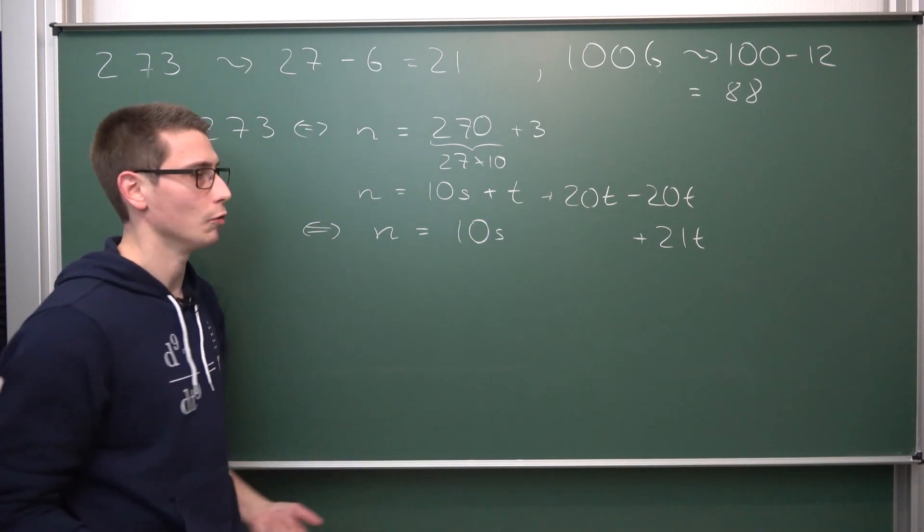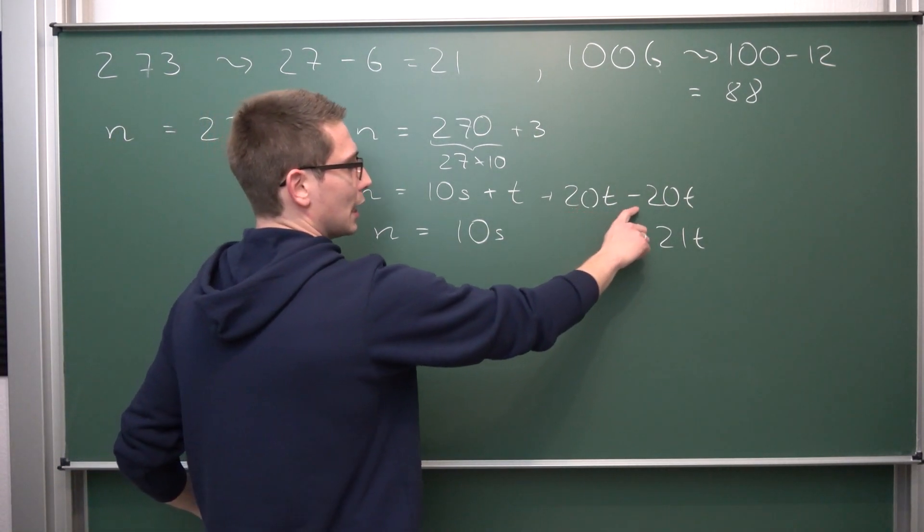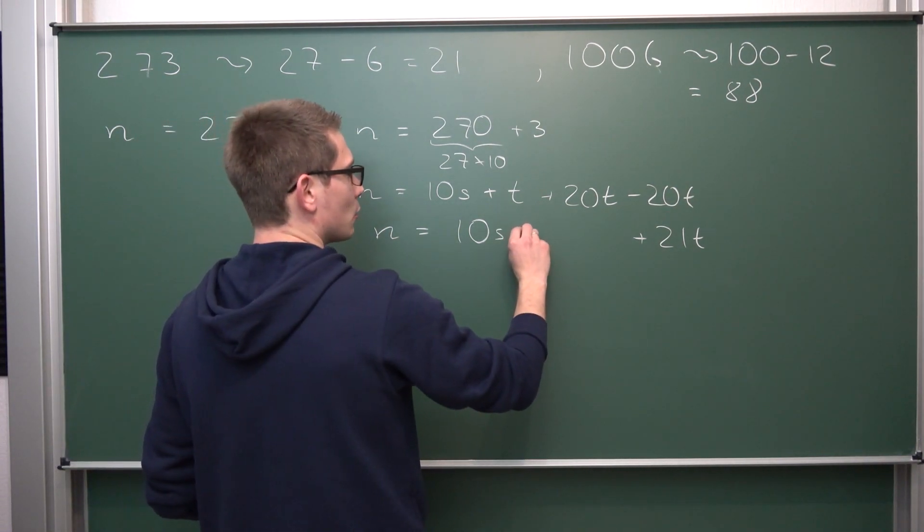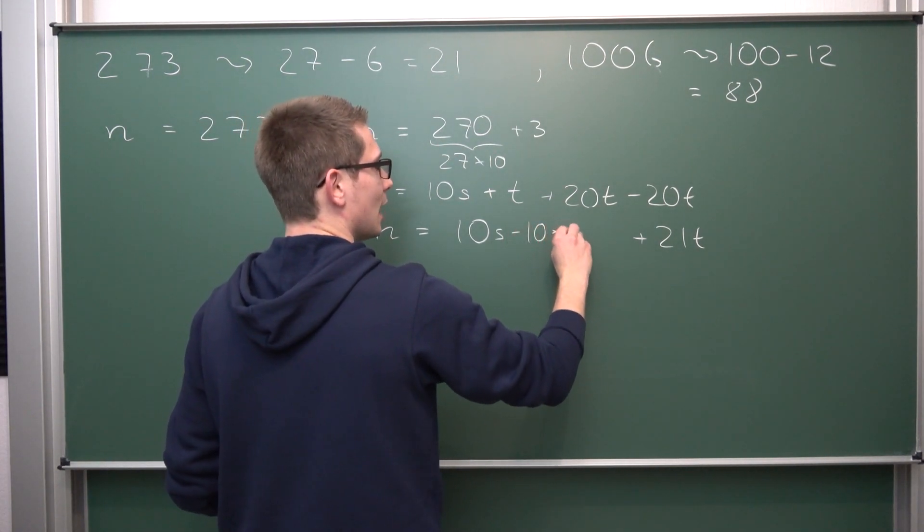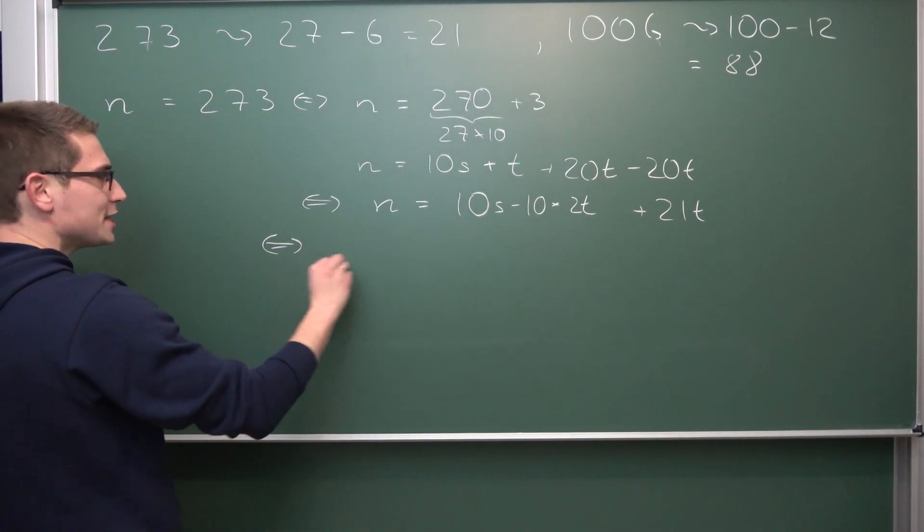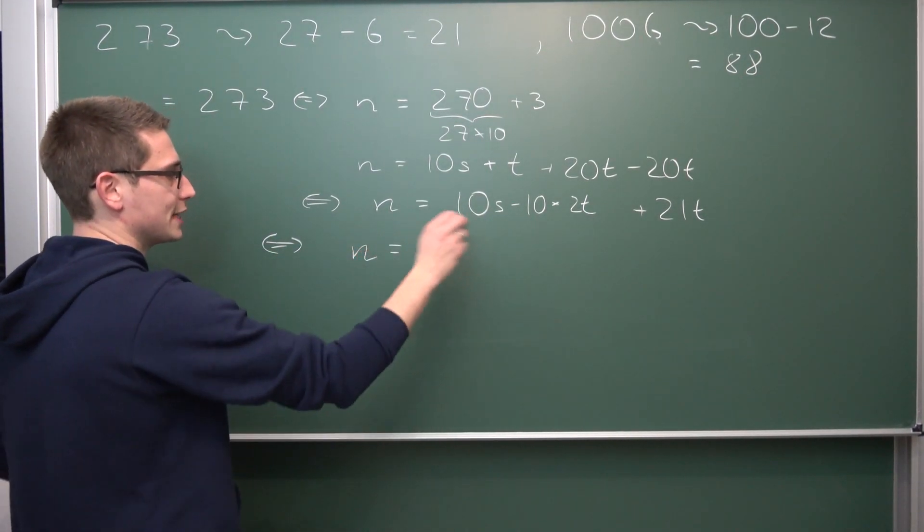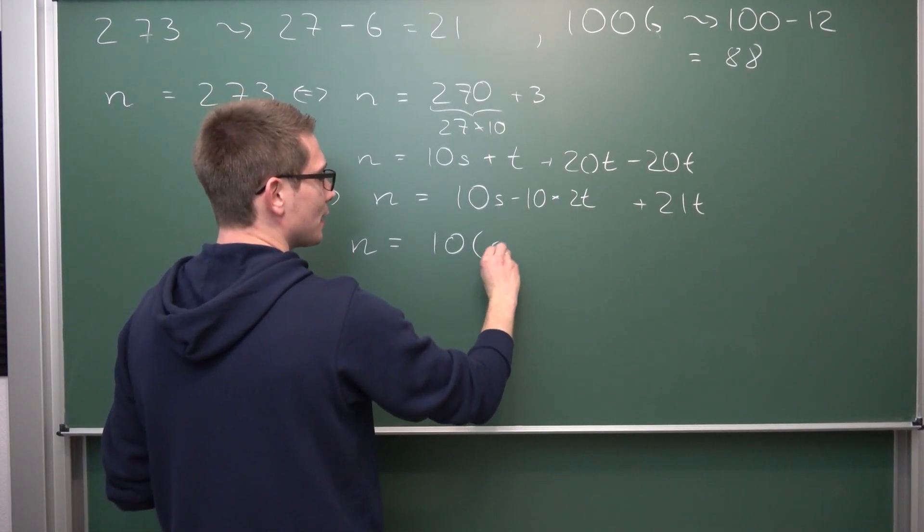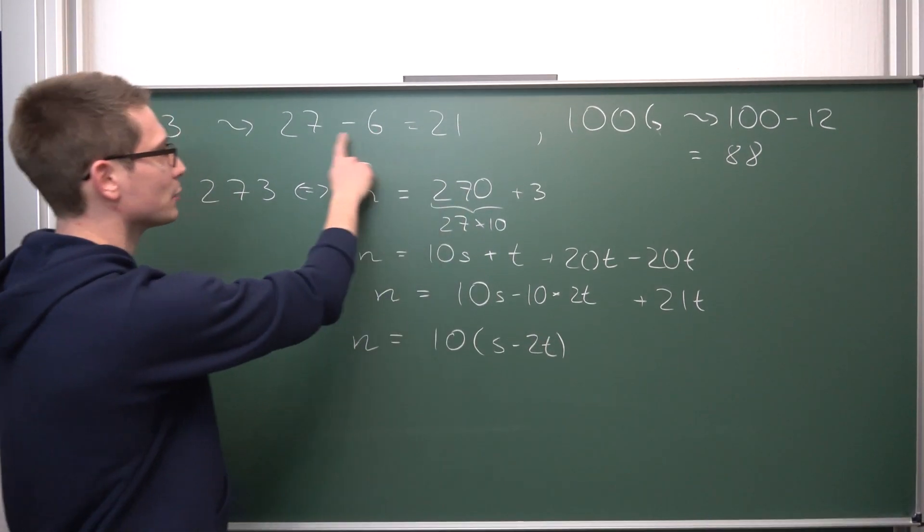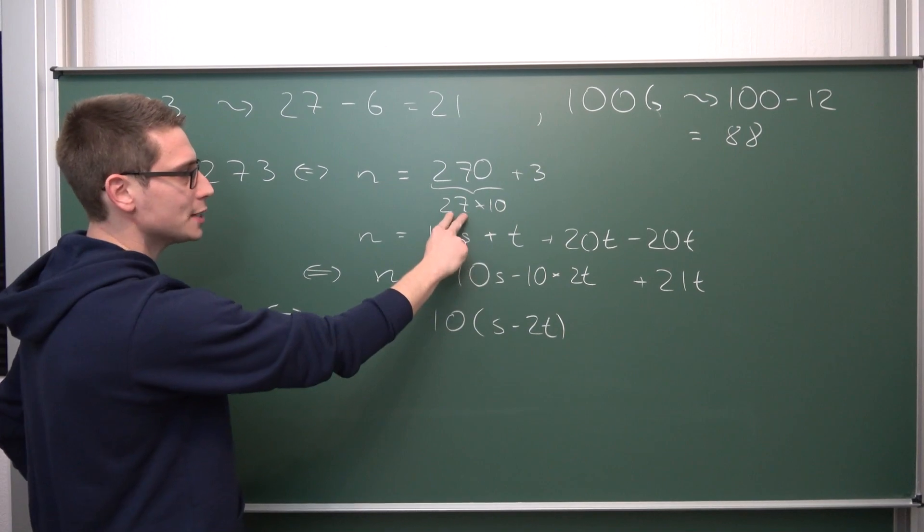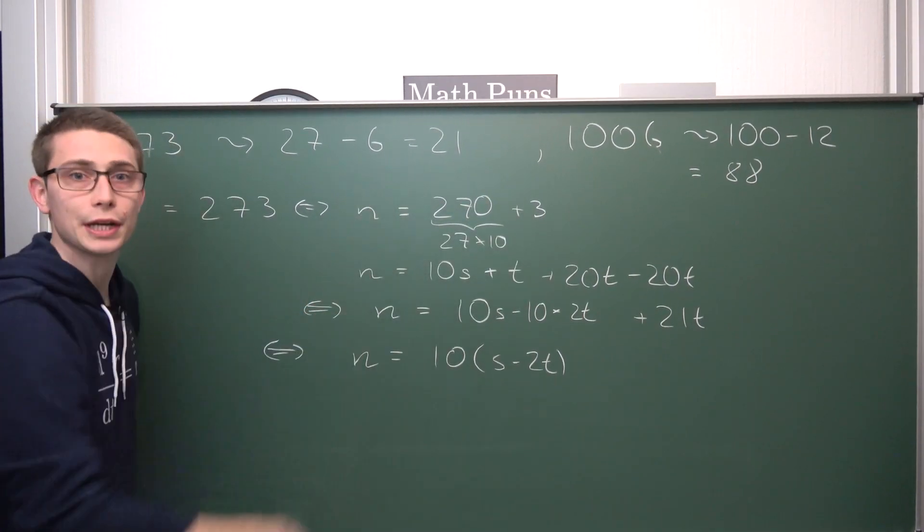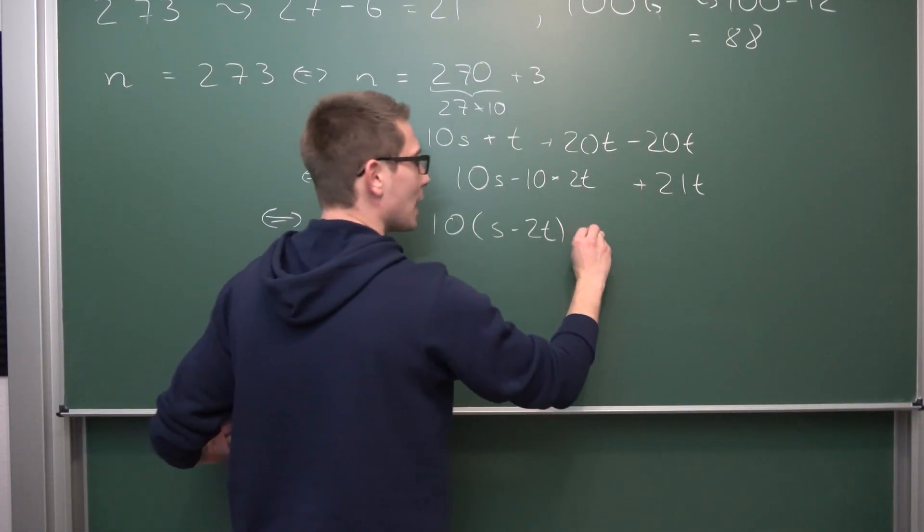21 is divisible by 7. We wanted to get something in the equation which is divisible by 7. This is going to make it easier for us to use divisibility rules overall. Other than that, what we are left with is negative 20t, but 20 is 2 times 10, so we get negative 10 times 2t. Now the cool thing is we can factor out 10 on this term. So n is hence 10 times (s minus 2t), which you might recognize as our divisibility rule. s in our case was 27 and we are going to subtract 2t, 2 times 3 from it, and plus 21t.